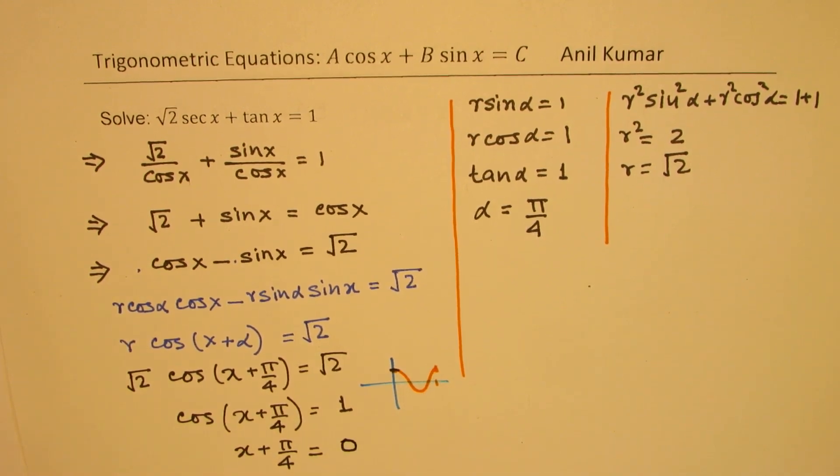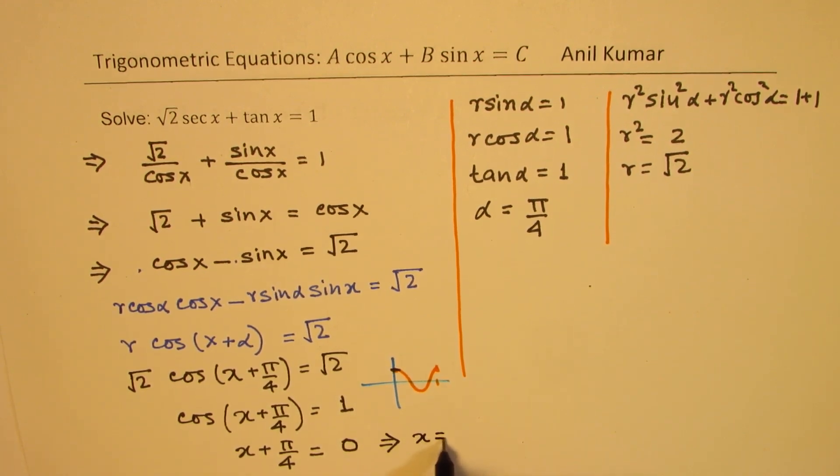So we can say it is equal to 0. So in that case, cos is 1 and we get the value of x as equal to minus pi by 4. So that is the value which is minus pi by 4.